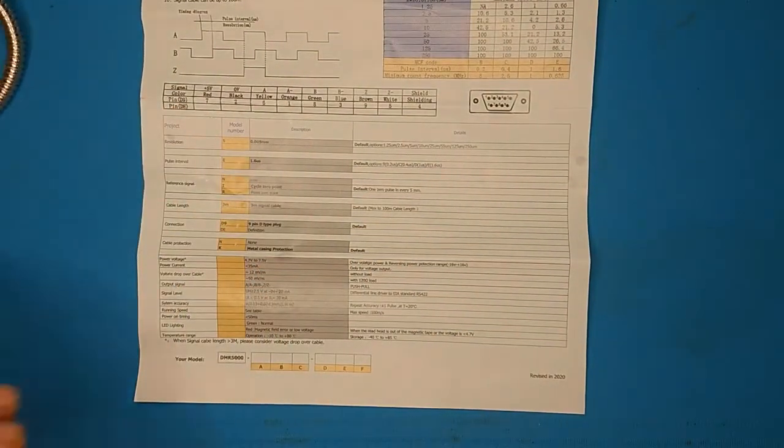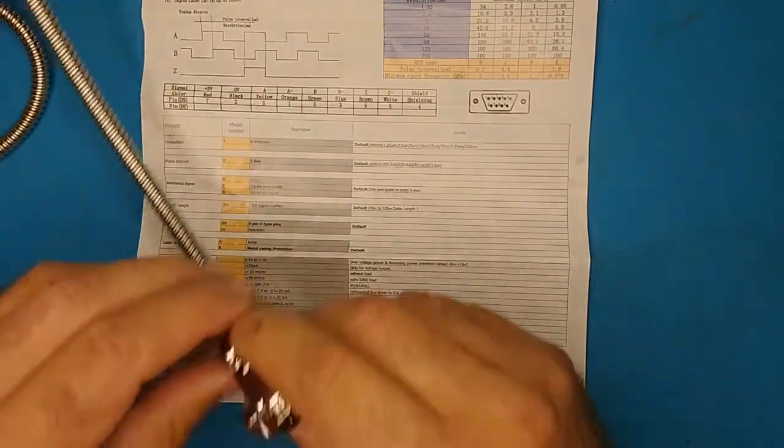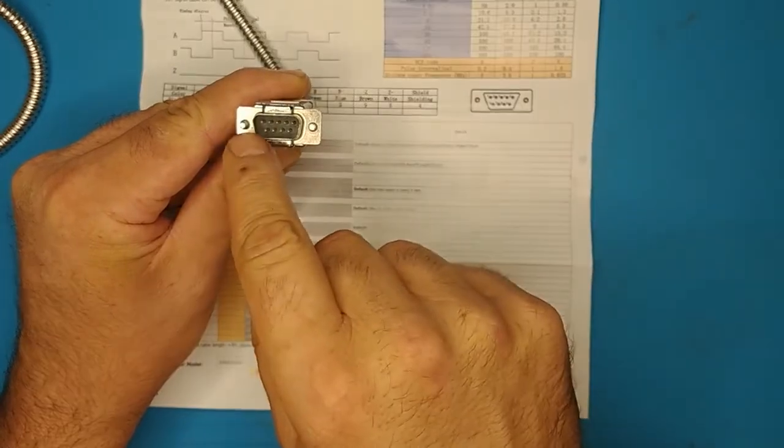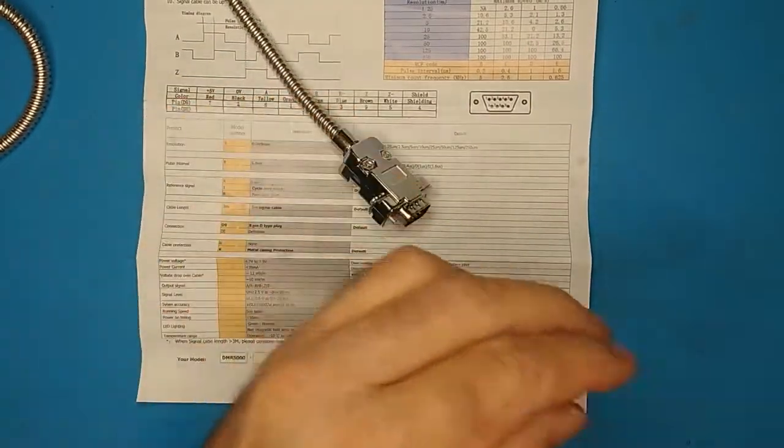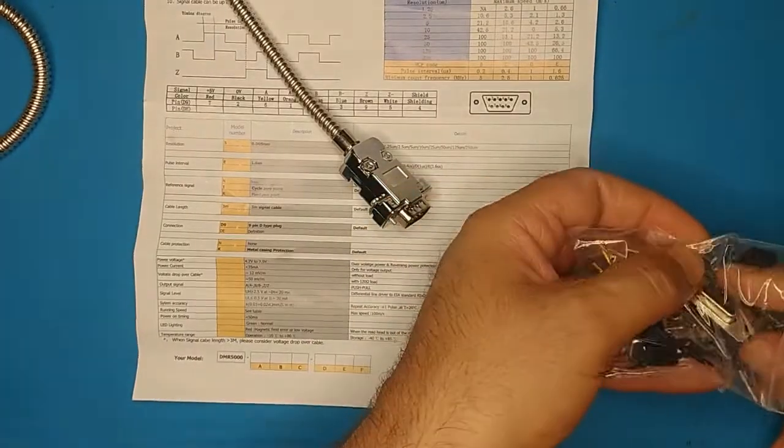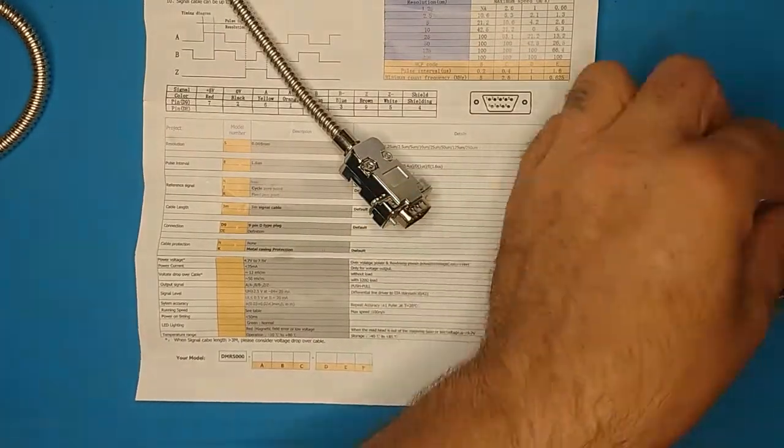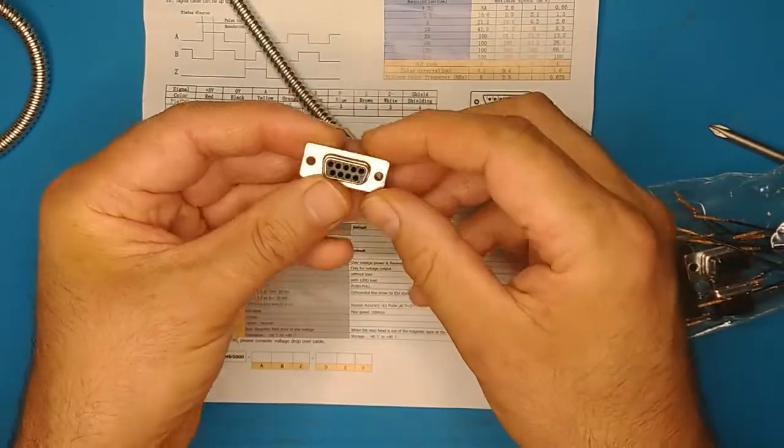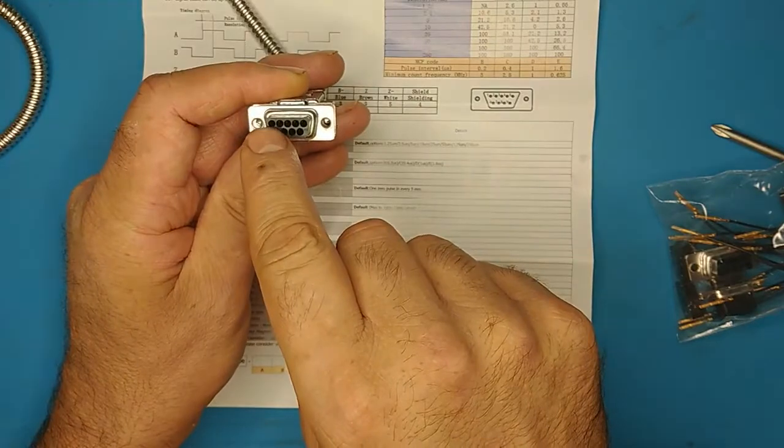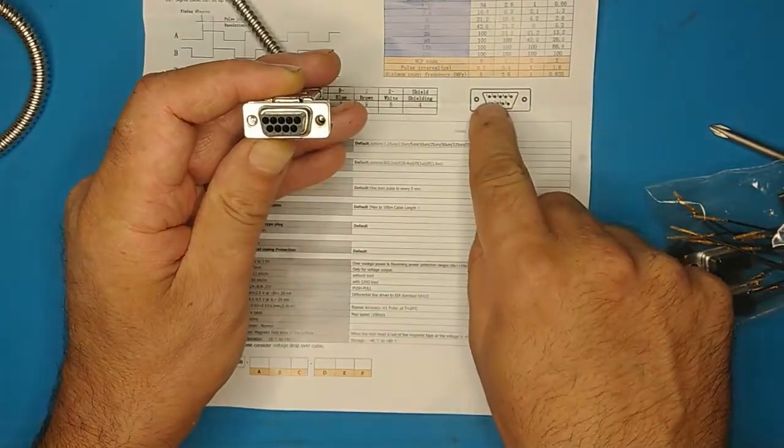And this gives the pin numbers and the diagram for the connector. Now, it's important to note that the connector diagram is looking at it head-on. So, pin 1 is this upper left pin in the connector.